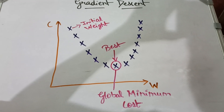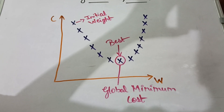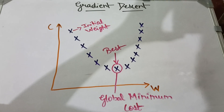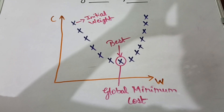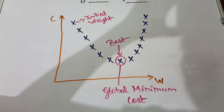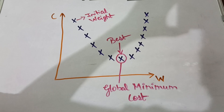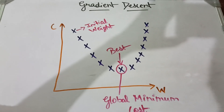This is gradient descent. Gradient descent is an optimizing algorithm for finding the minimum of a function. In the diagram you can see what it is — an optimizing algorithm.